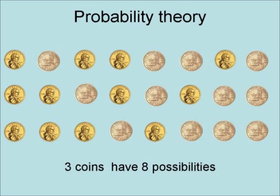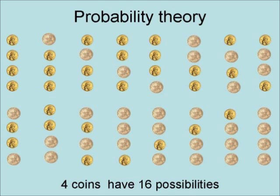Three coins have eight possibilities: one set of three heads, three sets of two heads and one tail, three sets of one head and two tails, and one set of three tails. Four coins have 16 possibilities: one set of four heads, four sets of three heads and one tail, six sets of two heads and two tails, four sets of one head and three tails, and one set of four tails.